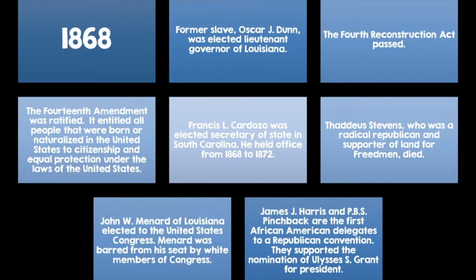In 1868, former slave Oscar J. Dunn was elected Lieutenant Governor of Louisiana. The Fourth Reconstruction Act was passed. The 14th Amendment was finally ratified in 1868, entitling all people born or naturalized in the United States to citizenship and equal protection under the laws of the United States. Francis L. Cardozo was elected Secretary of State in South Carolina, holding office from 1868 to 1872 as an African American. Thaddeus Stevens, a radical Republican and supporter of Land for Freedmen, died.